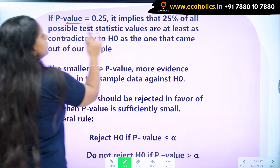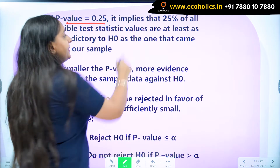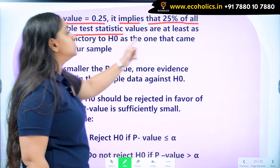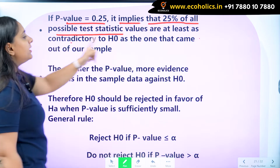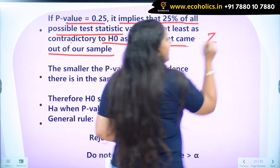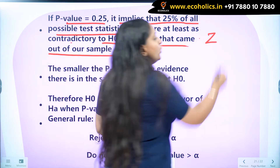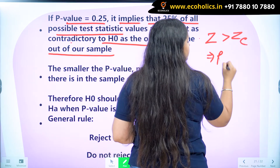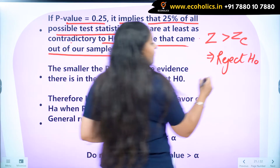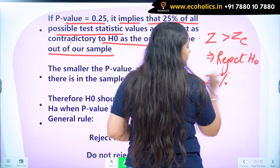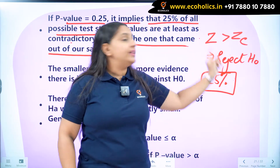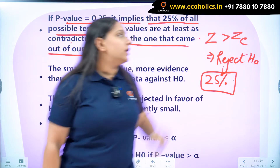So if p-value is equal to 0.25, what does it mean? It implies that 25% of all possible test statistic values are at least as contradictory to H0 as the one that came out of our sample. So if from my sample I calculated a test statistic Z which is greater than Z critical — leading to rejection of H0 — I have a 25% chance of getting a value which will be as contradictory, meaning they will also be greater than the Z critical value.